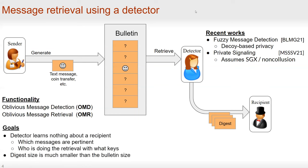The first goal is that we want the detector to learn nothing about a recipient — it doesn't learn which messages are pertinent and which are not, and it doesn't learn who is doing the retrieval or with what keys. The second goal is that we want the digest size to be much smaller than the bulletin size; ideally, it should only be proportional to the number of pertinent messages.